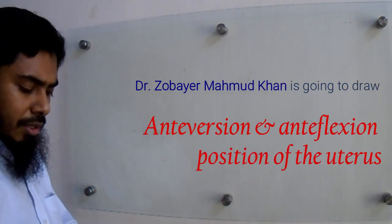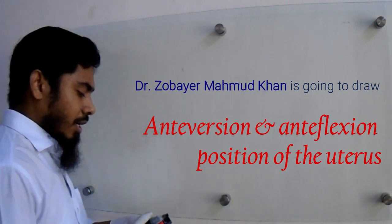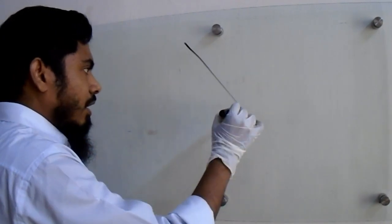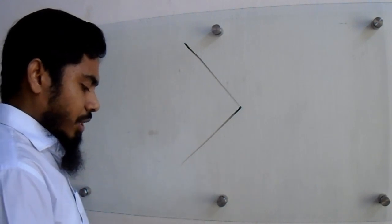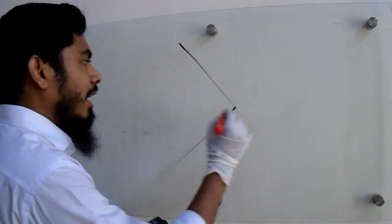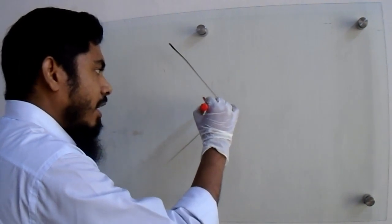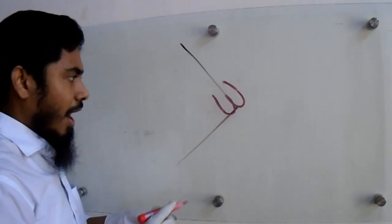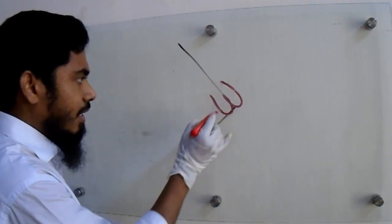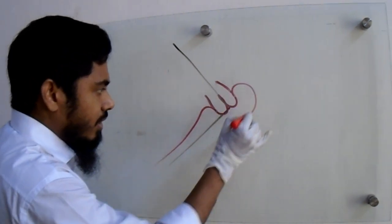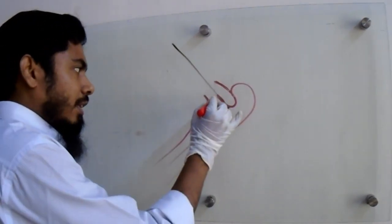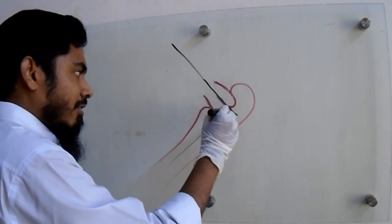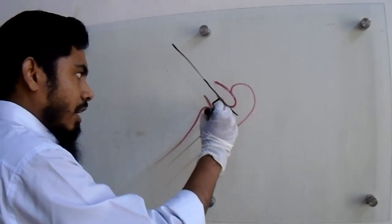A very important support of the uterus is the anteversion and anteflexion position of the uterus. To draw this, you draw two lines at right angles to each other, then draw the cervix like the English letter W keeping this line in the center. Then draw the vagina — here is the anterior wall and this one is the posterior wall. The angulation between the long axis of the cervix and the long axis of the vagina is termed as anteversion.